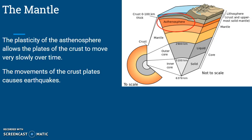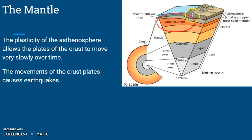The plasticity in the asthenosphere allows the plates of the crust to move very slowly over time. The movement of the crust plates causes earthquakes. Because the asthenosphere has plasticity, it allows the lithosphere — the solid plates of the crust — to move. They don't move very fast, but they can move very suddenly in certain places, and those sudden shifts we call earthquakes.